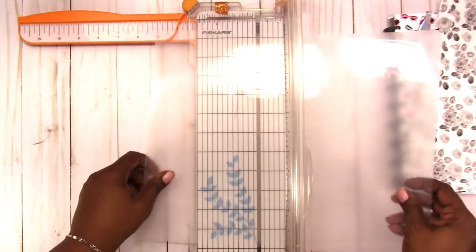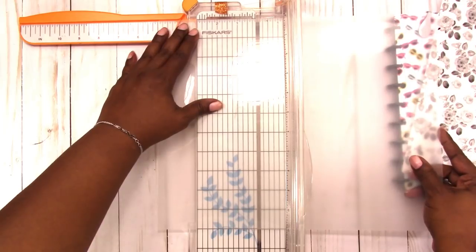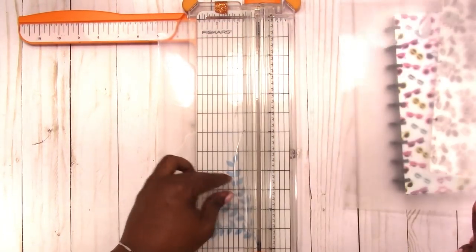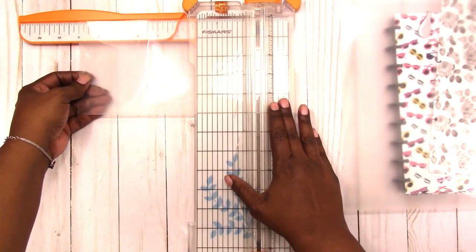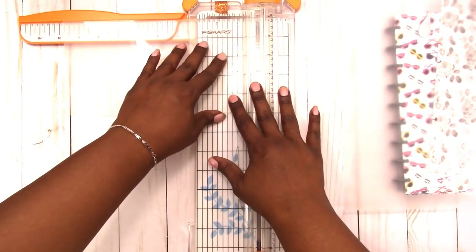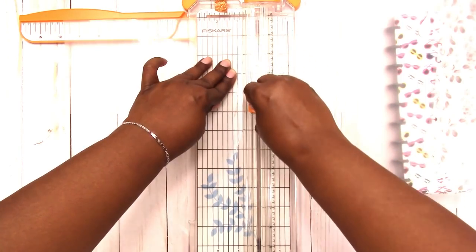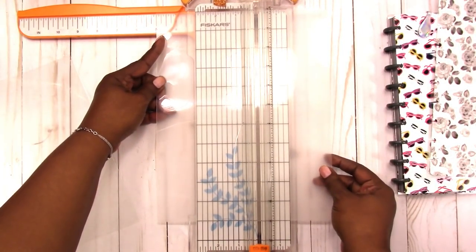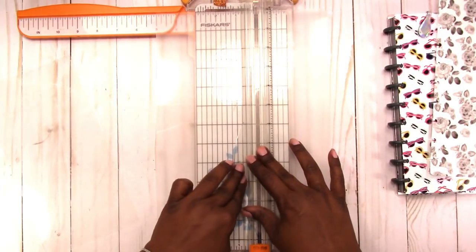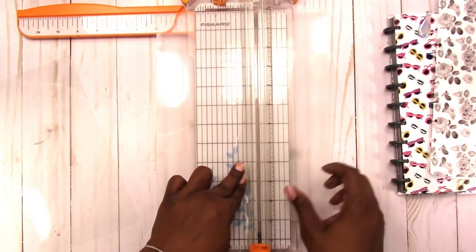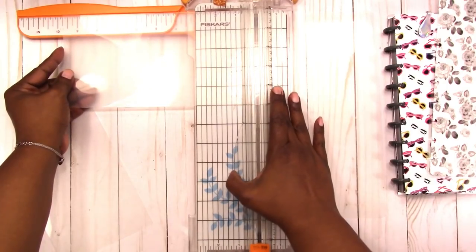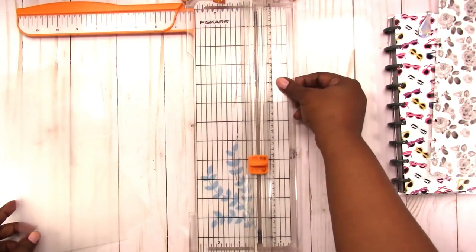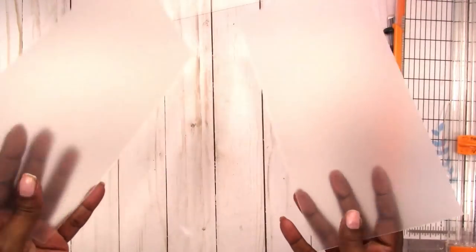Okay, so now we have a clean edge to work with. So we said five inches wide. Okay, so I need another one because we need a front and a back. Okay, so we got our two pieces.